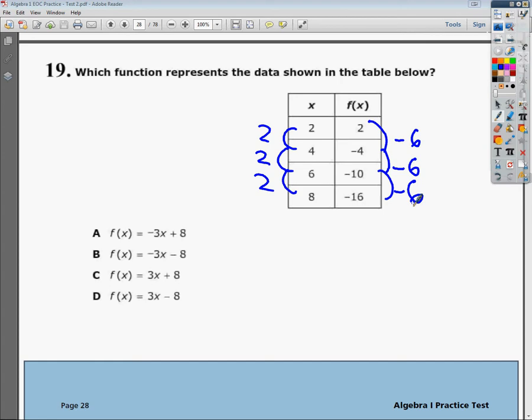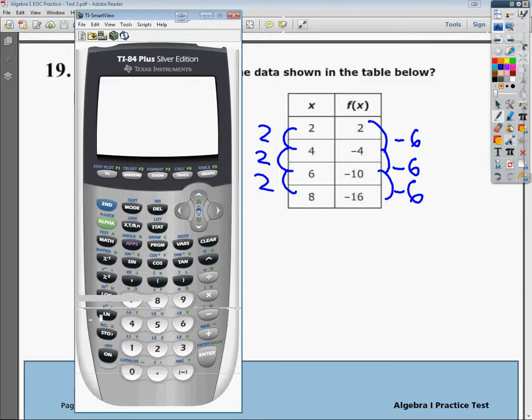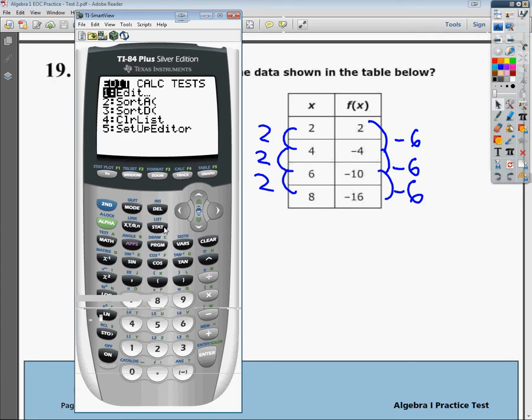So the first way I'm going to solve this is I'm just going to make a list. If I know it's linear, I can make a list. It makes my life much easier, or not necessarily that much easier. I'm going to go into the list section.